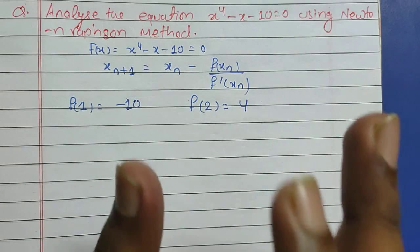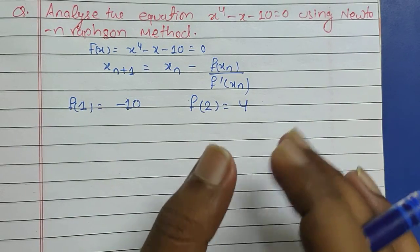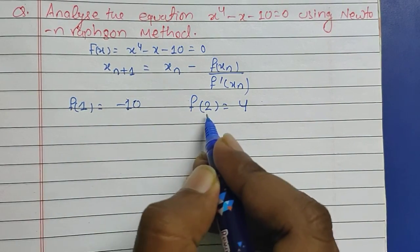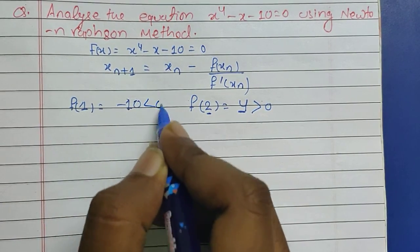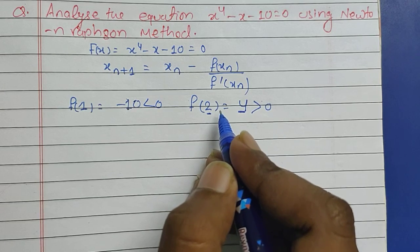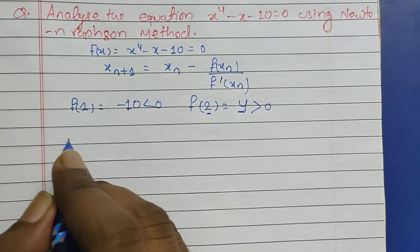Here 2 gives us 4 which is greater than 0, this is less than 0, so our x_0 is going to be 2. So now find the first root.